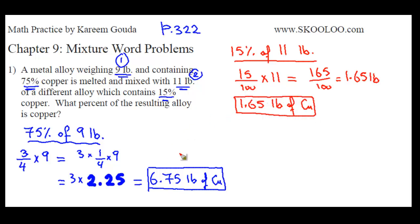Now what do I need to do? I need to add these two alloys, add the copper in these two alloys. The copper in the first one is 6.75 pounds. The copper in the second one is 1.65 pounds. So add them. What do you get? 6.75 plus 1.65 equals 8.4 pounds of copper. So the total mixture now has 8.4 pounds of copper.